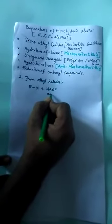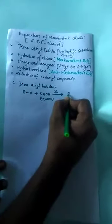Let us discuss first method from alkyl halides. So alkyl halides represented by R-X react with sodium hydroxide, aqueous sodium hydroxide in the presence of certain energy, gives R-OH plus NaX as byproduct.